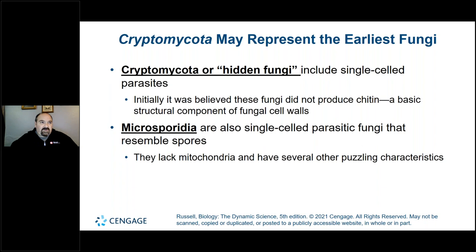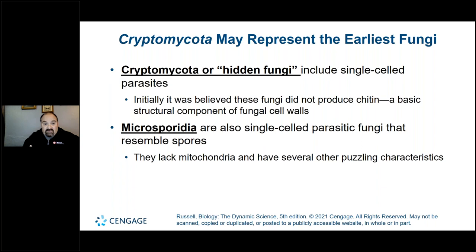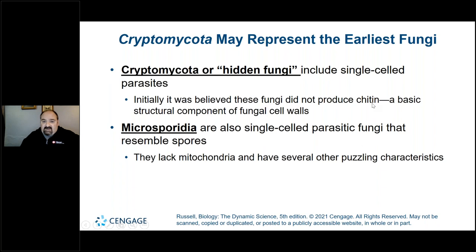Chitin is analogous to keratin in humans — keratin for our hair, our nails, filling in the outer layer of our skin. Very strong and important component of the cell wall of fungi. With cryptomycota, these hidden fungi, it was believed they didn't produce chitin. Microsporidia are single-cell parasitic fungi — if it's a parasite, only one organism is benefiting.